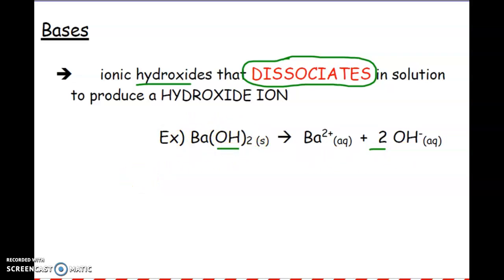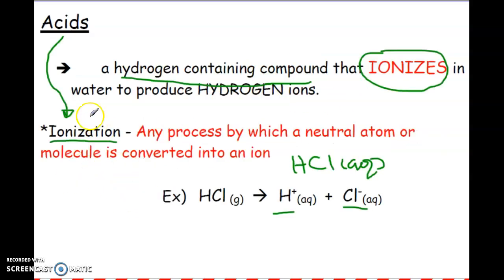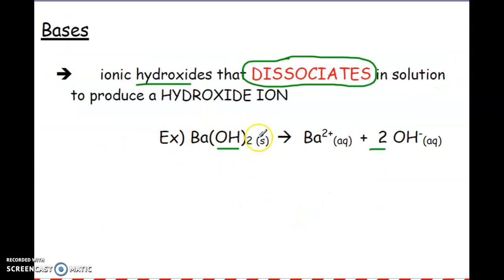The difference here is bases are classified the same as an ionic compound, its dissociation. When you have an acid, typically we're using the term ionization because we have a covalent molecule that is separating into its ions. Whereas here, this is already an ionic compound breaking up into the ions.